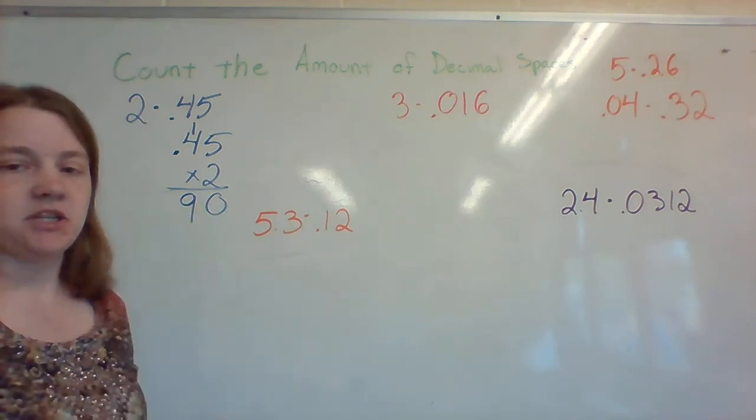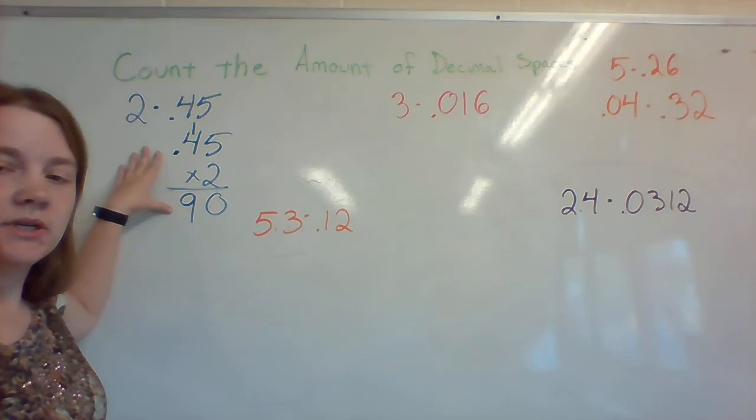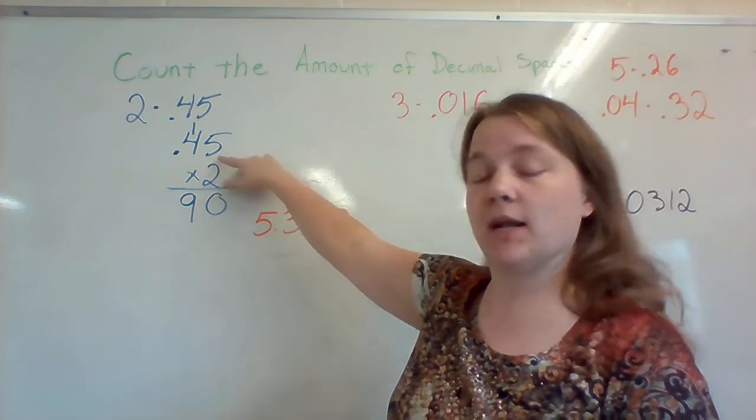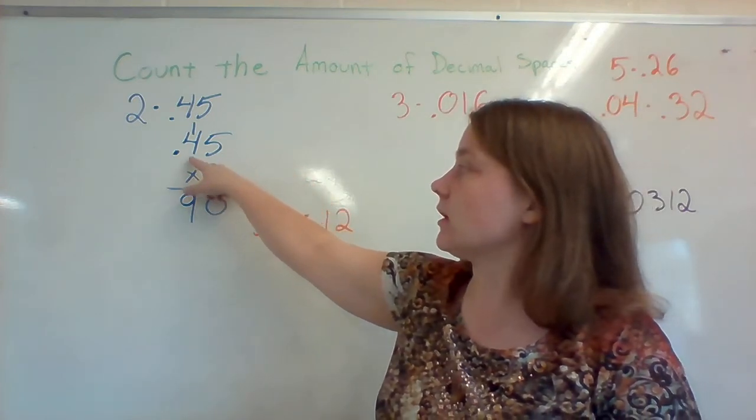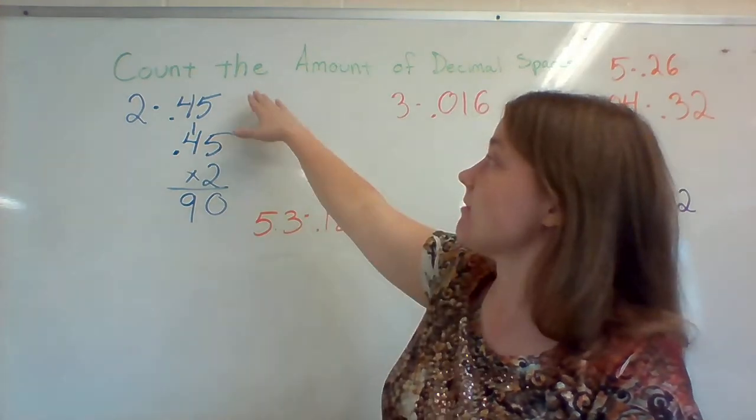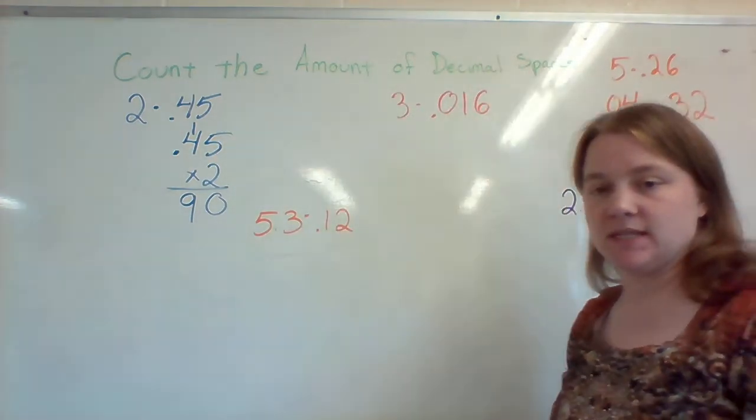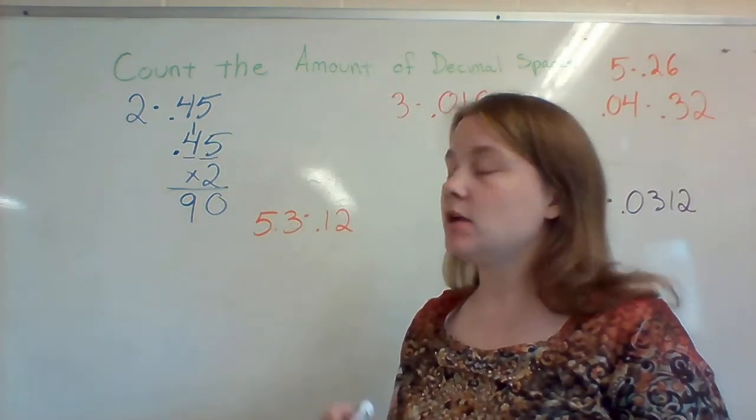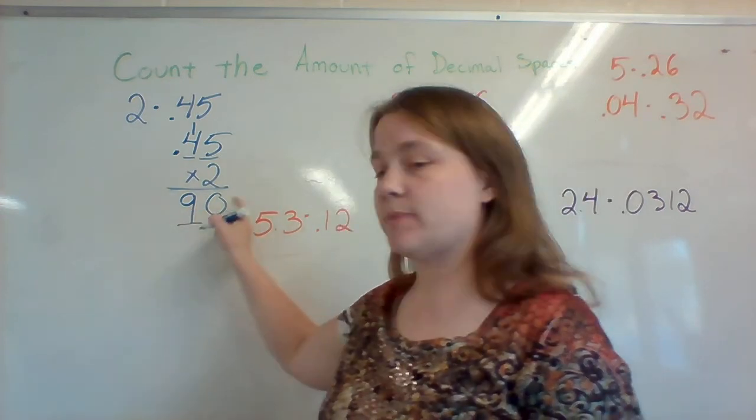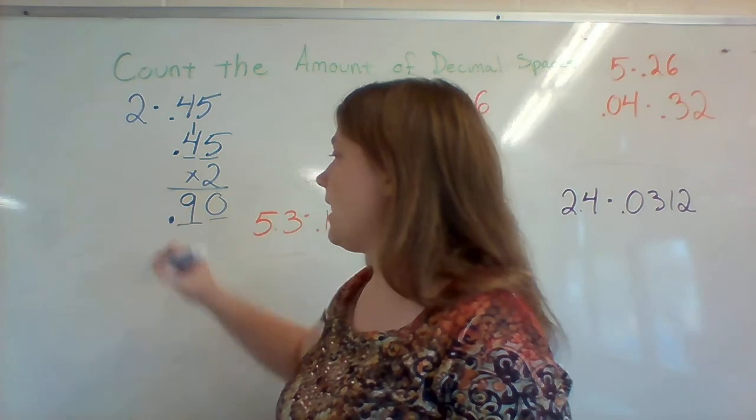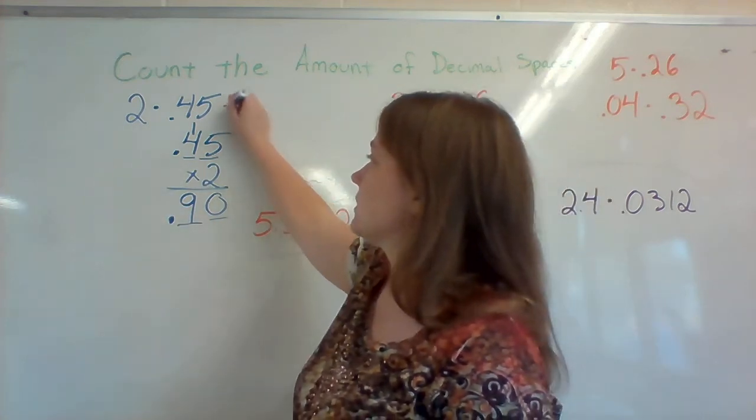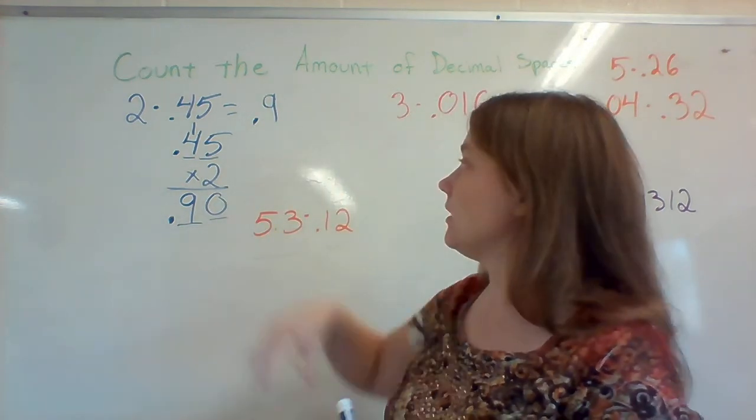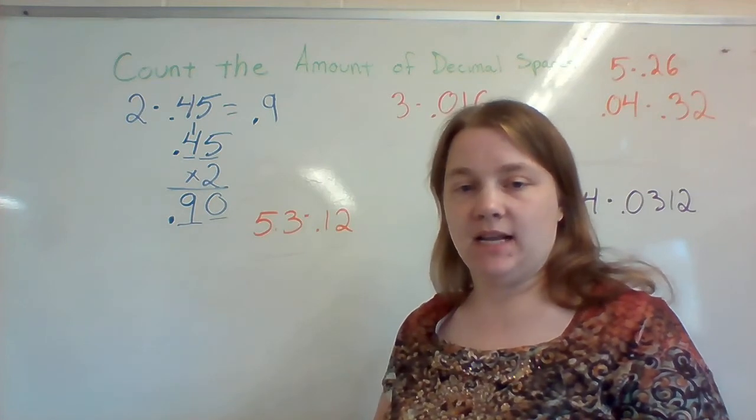Now I've done the multiplication. All I need to do is look at the decimal sign. When I look at the decimal sign, I know that there are two numbers after the decimal sign. I'm going to count the amount of decimal spaces. So there are one, two numbers after a decimal sign. So I'm going to go one, two spots from the end of my number, and that's where my decimal is going to go. So my answer is going to be 0.9. Because that zero isn't necessary anymore, so my final answer is going to be 9 tenths.